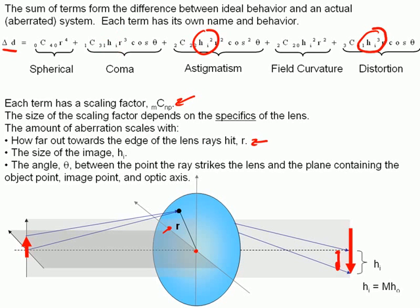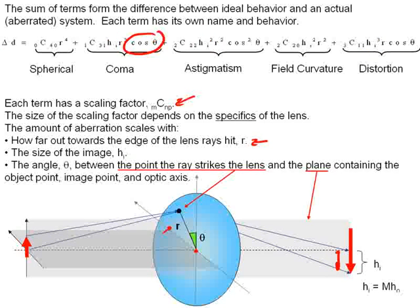The final thing you see in this equation for the difference between a perfect system and aberrated system is a term cosine of theta. And theta is defined to be the angle here between the point the ray strikes the lens and the plane containing the object point, image point, and optical axis. And that's this plane shown as the gray line right here.